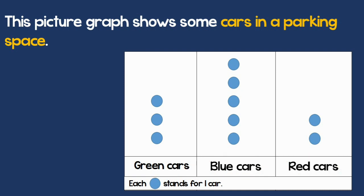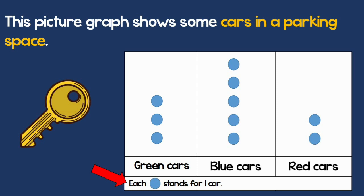Let's read the key. Each mark stands for one car. That means that if I have three marks for the green cars, there are only three green cars.